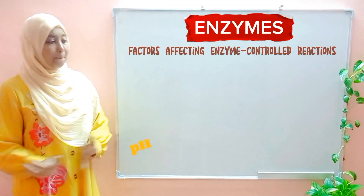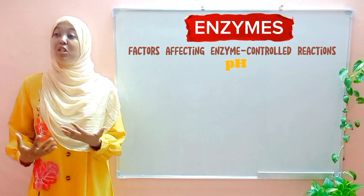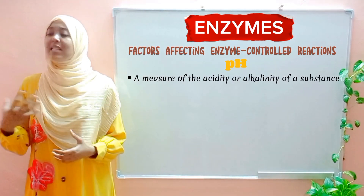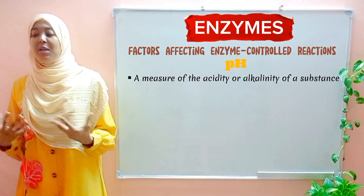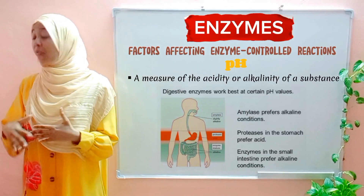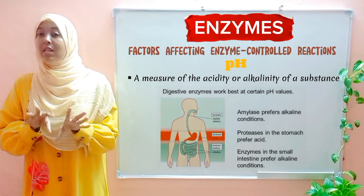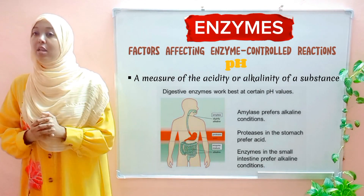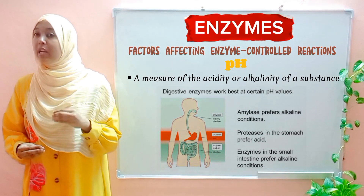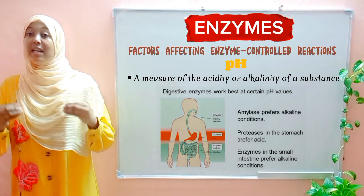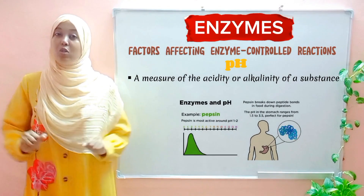Moving on to the next factor: pH. pH is a measure of the acidity or alkalinity of a substance — whether it is acidic, basic, or neutral. When it comes to enzymes, they are specific in the pH they prefer. Some prefer an acidic pH, others prefer an alkaline one, but most enzymes usually prefer a neutral pH. A good example of enzymes that prefer an acidic pH are those present within our stomach.